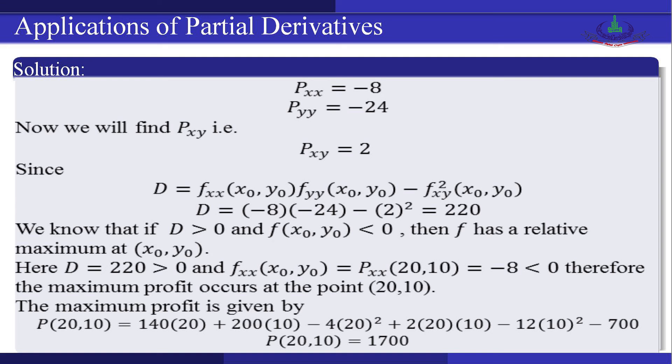The second-order partial derivative P_xx = −8, P_yy = −24, and P_xy = 2. Using the formula D = P_xx · P_yy − (P_xy)², we get D = (−8)(−24) − (2)² = 192 − 4 = 188, which is greater than 0.